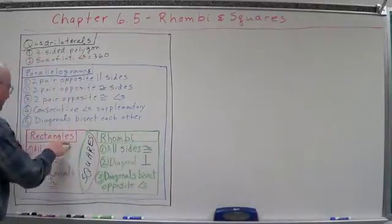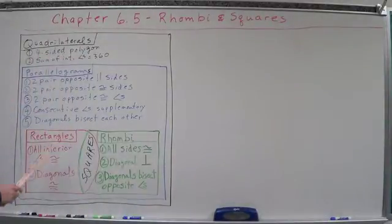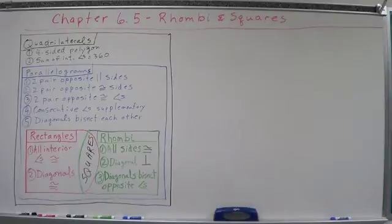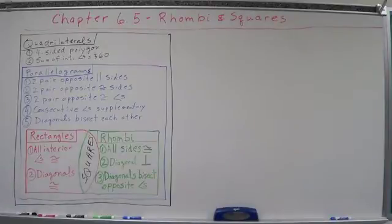Rectangles are parallelograms, and they have their own characteristics or rules. First rule for rectangles is all interior angles are congruent. Second one is the diagonals are congruent.